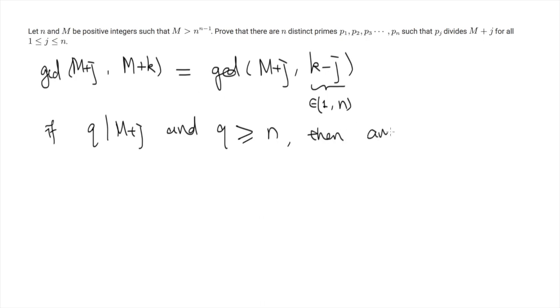So now let's consider one particular M plus J. So if we can find a prime factor which is larger than n, then we are happy because this means that among all these numbers, M plus 1 until M plus n,